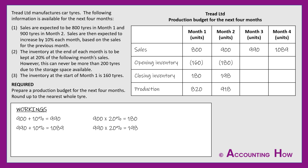For month three, forecast sales are 990. The opening inventory is 198 from month two's close. The closing inventory is 20% of month four's 1,089 sales — that's 217.8, rounded up to 218, but this exceeds the 200-tyre storage cap, so closing inventory is capped at 200. Month three production: 990 minus 198 plus 200 equals 992 tyres.